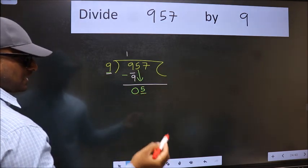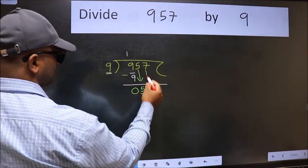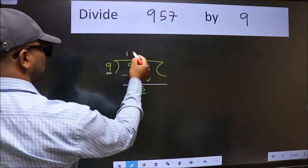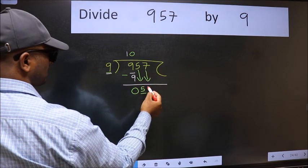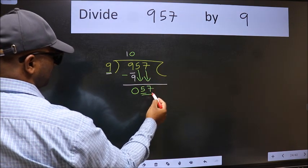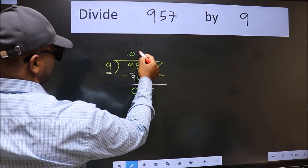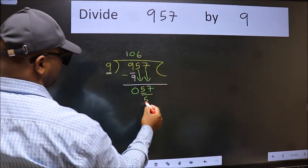So we should bring down the second number. And the rule to bring down the second number is we should put 0 here. Then only we can bring this number down. Now 57. A number close to 57 in the 9 table is 9 times 6, 54.